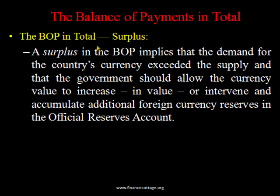A surplus in balance of payment implies that demand for a country's currency exceeded its supply. This normally occurs when a country is exporting more than it is importing — the country's currency demand increases because buyers in foreign countries must pay in the local currency of the country whose products they are buying. So if you are exporting more, you are increasing the demand for your currency.